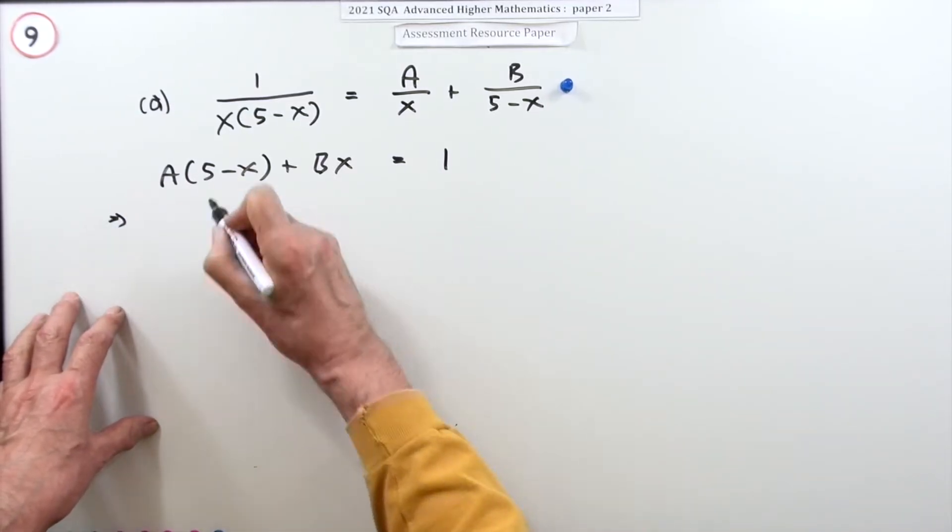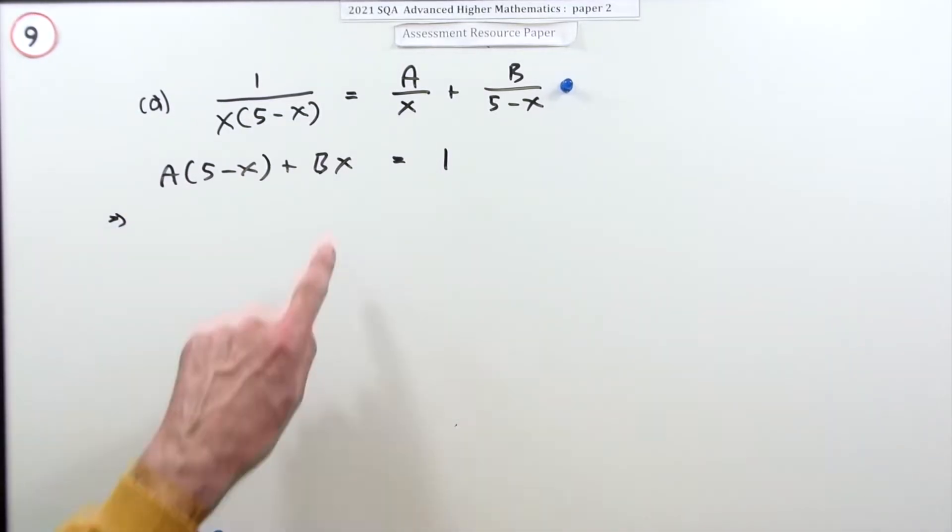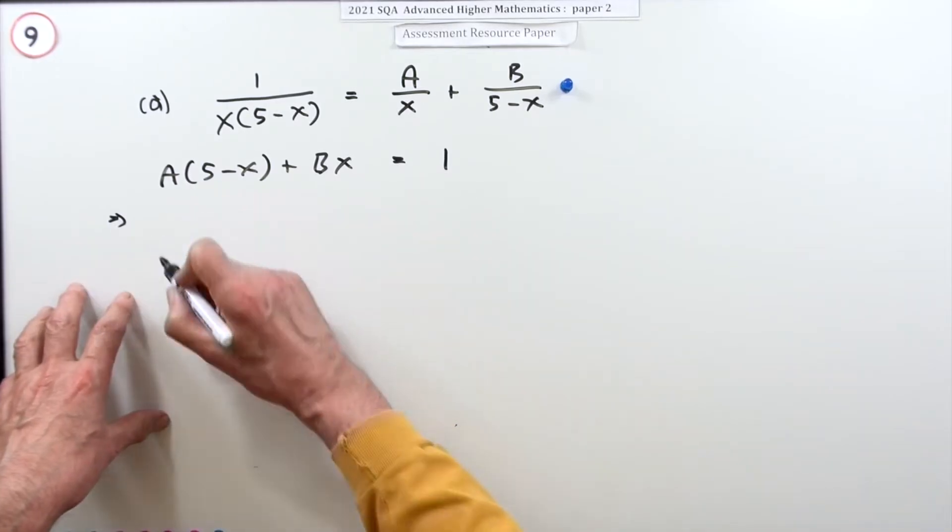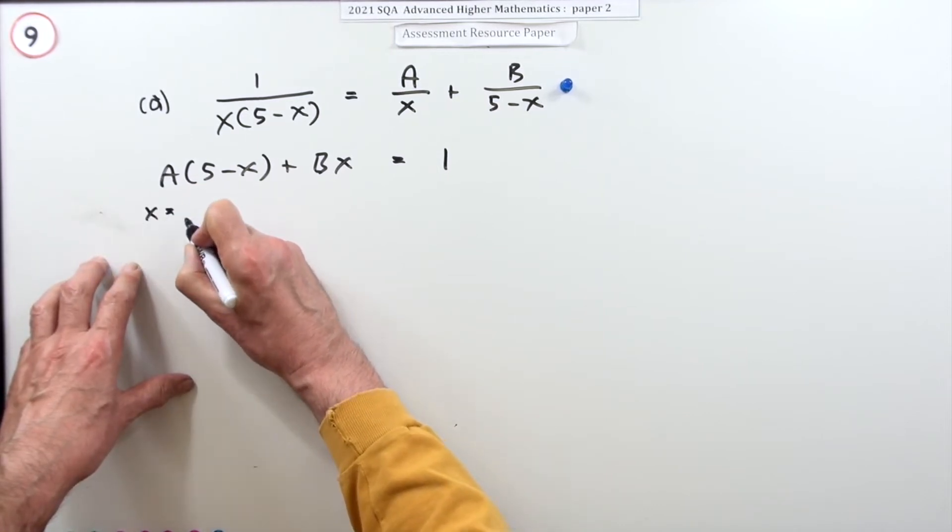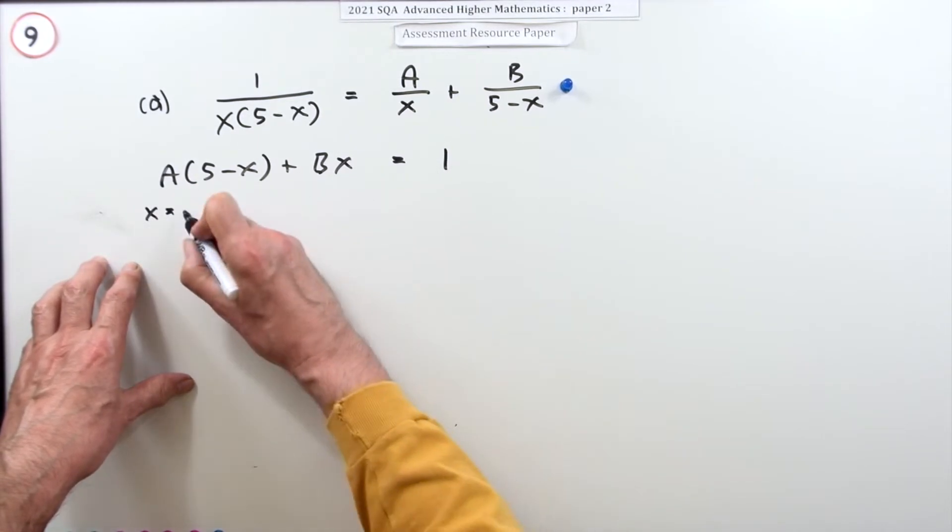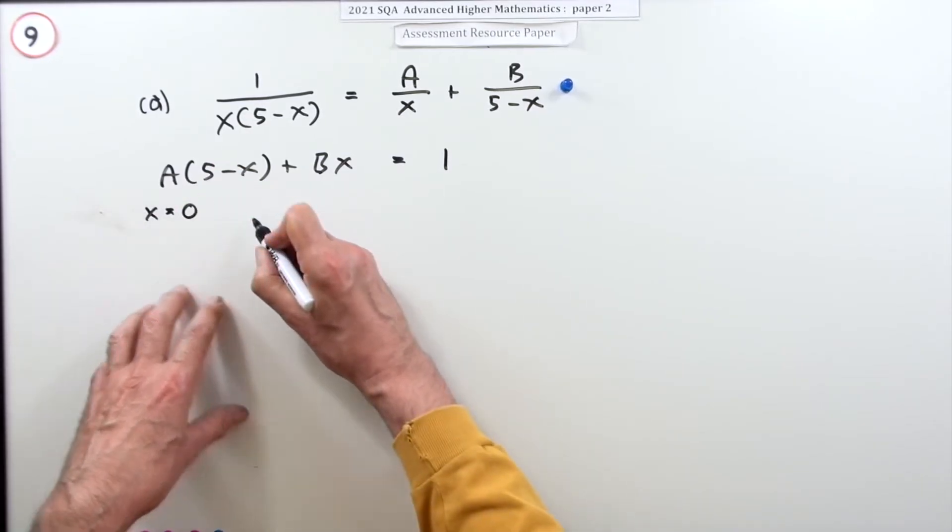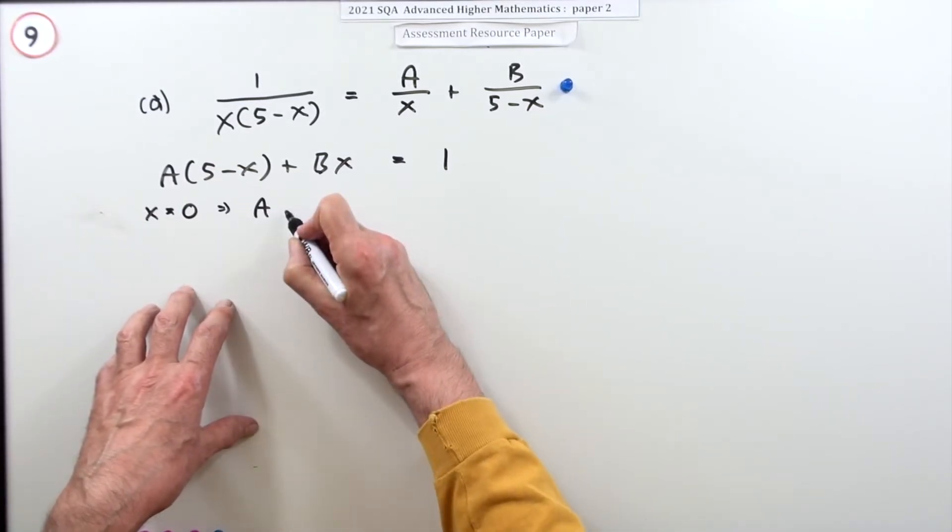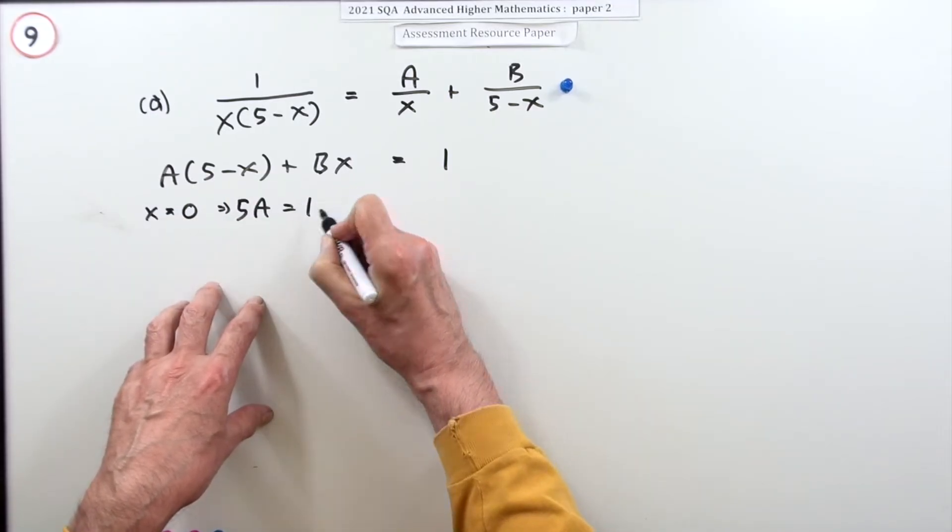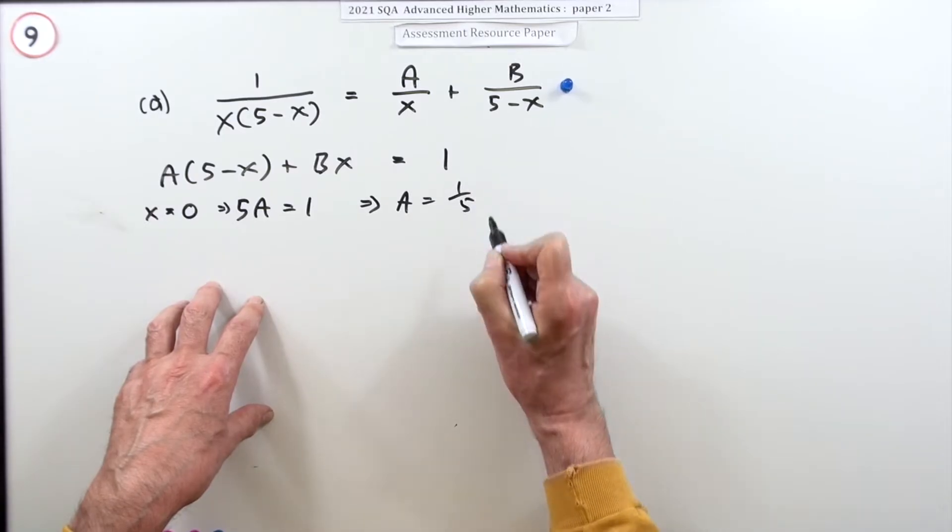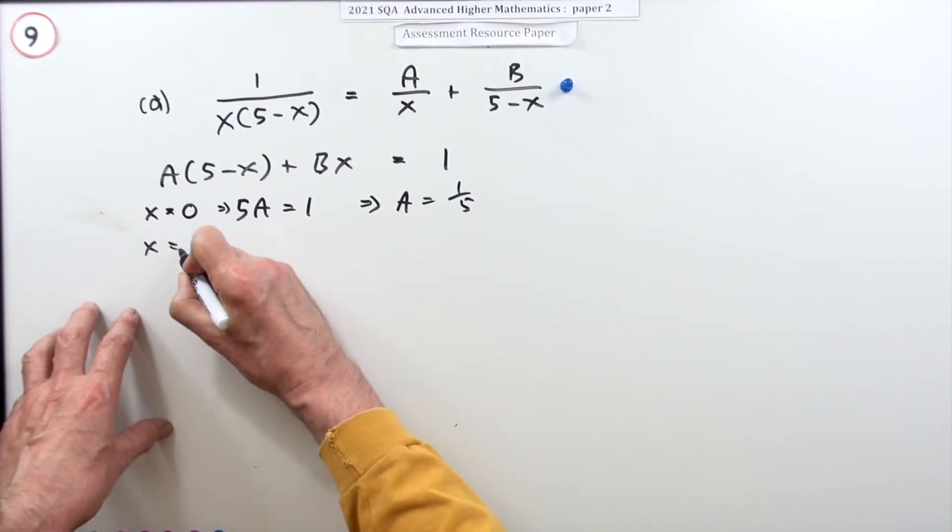Now the first mark is just for doing this. Now there's two ways of solving that: you could multiply that out and compare them term by term, or you could just use the knockout values. So if you chose x equals, let's say we knock out that first. If x equals zero, it'll leave a. If x was to equal zero, that means you'd have a times five, which is 5a equal to the one, so a would be a fifth.